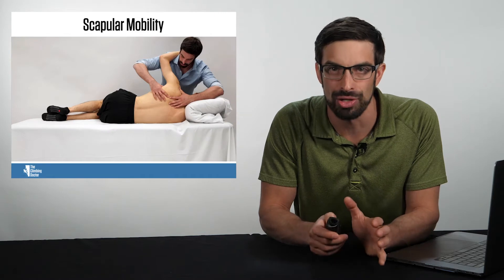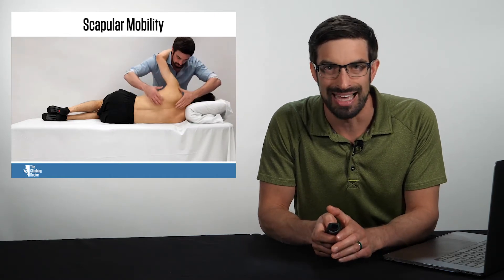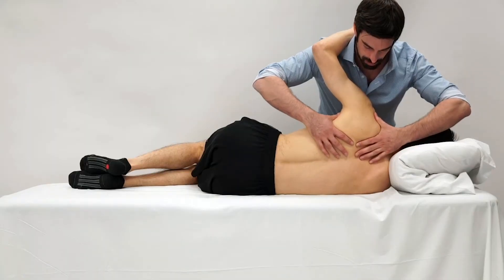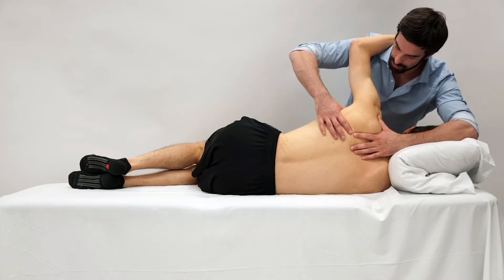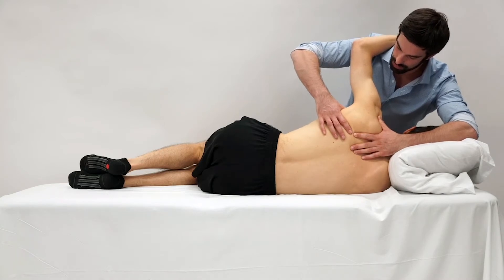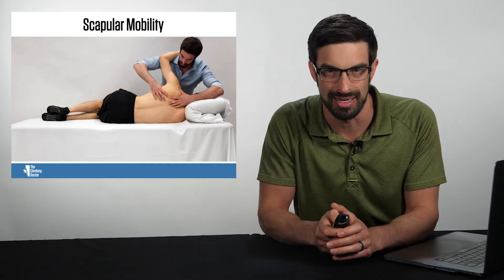First, scapular mobility. I want you to take a look at this assessment. As you can see here, I'm grasping the scapula, I'm then shifting my body, creating scapular abduction and upward rotation, and I'm feeling to see if there's any resistance to motion during that technique.